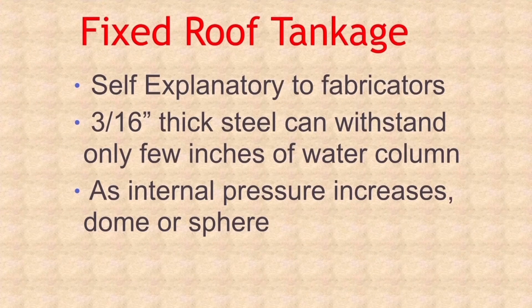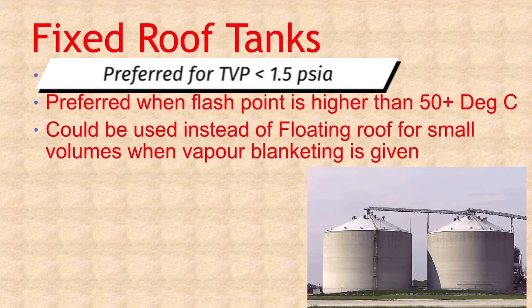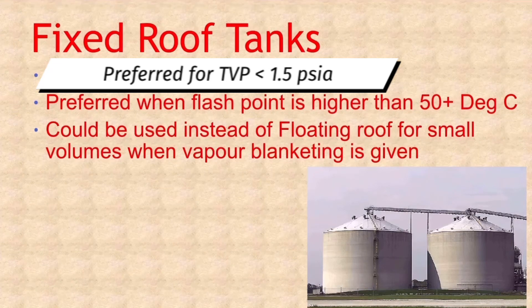Typically a cylinder is an economical shape for storing fluids but needs the ends to be closed. Flat roofs do not allow high pressures, and as pressure increases the most economical shape is dome or umbrella type. Fixed roof tanks are used for storing water or low volatile substances such as heavy crudes, lubricants, and residual oil. Fixed roof tanks should be used for the storage of non-volatile, low vapor pressure materials with true vapor pressure less than 1.5 psi absolute at all operating conditions.